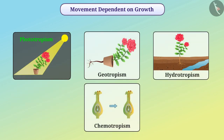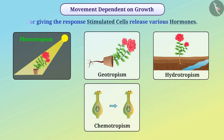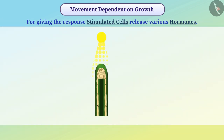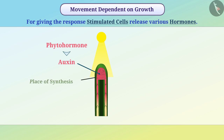Plants respond to various environmental stimuli. For giving the response, stimulated cells release various hormones depending on the stimulus. For example, when the plant detects the stimulus of light, the shoot produces the hormone auxin. A hormone is an organic compound produced in small concentration and is used to transfer information to various parts of the organism. The hormone produced by a plant is called a phytohormone. The place of synthesis of the hormone and the site of its action are often different, so the hormone reaches the functional area through diffusion.